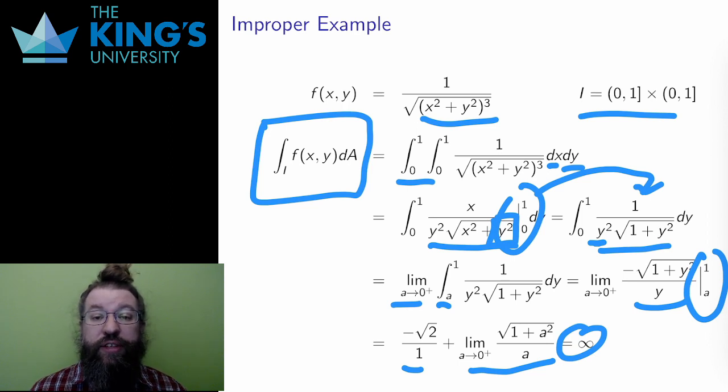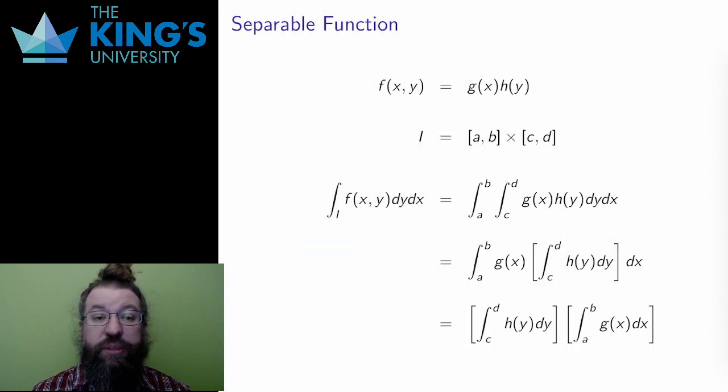Now let me move on to the second little observation for this video. Sometimes it happens that a function of two variables is the product of two single variable functions, f equals g times h. In this case, the iterated integral has a particularly nice form.